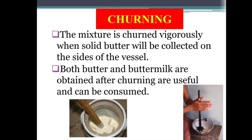Churning is the process of shaking up cream or whole milk to make butter. The mixture is churned vigorously — that is, strongly or powerfully — so that the solid butter will be collected on the sides of the vessel. This churning process converts whole milk into butter and buttermilk. Both butter and buttermilk obtained after churning are useful and can be consumed.